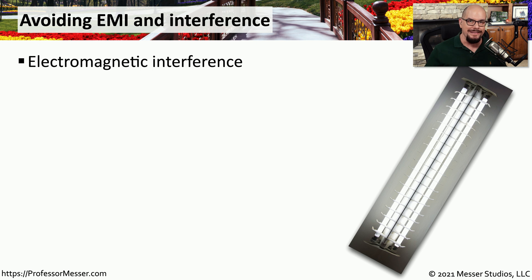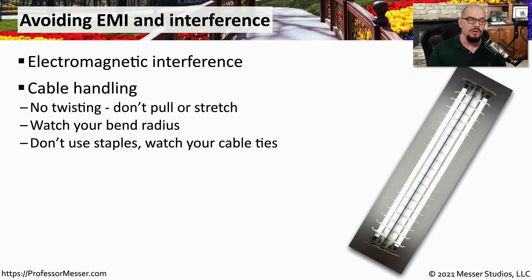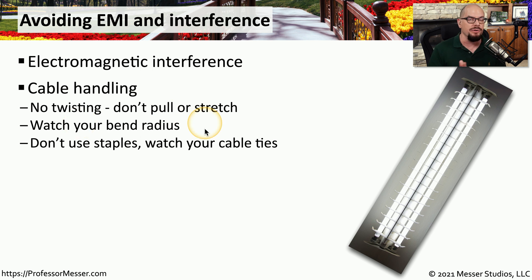Not only do you have to worry about the distance of the cable, you also have to be concerned about things that may be affecting the signal inside of the cable. This would be EMI, or electromagnetic interference, which can be created by many different components. You first need to be sure the cable you're using is not damaged — don't twist, pull, or stretch it during installation. Be sure the bend radius does not exceed the manufacturer's specifications, and never use staples when fastening cable; use cable ties or Velcro instead.